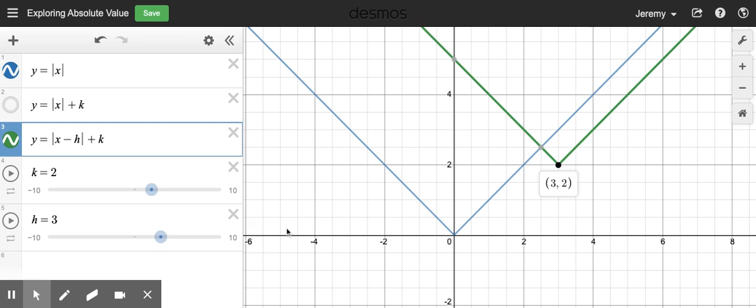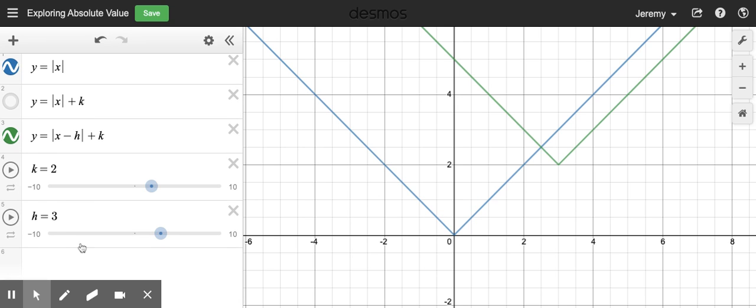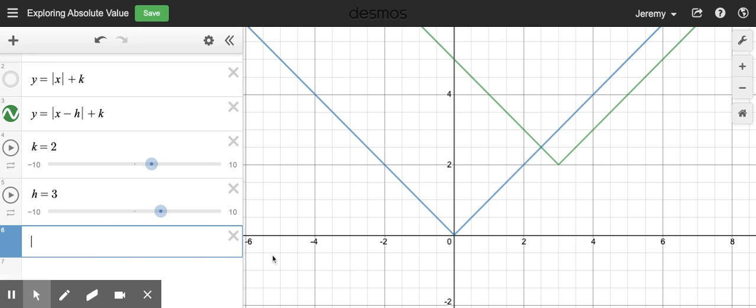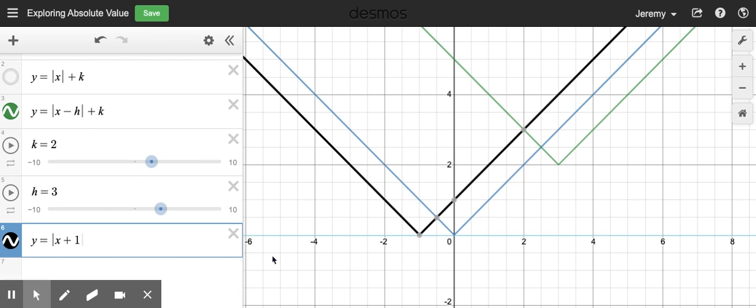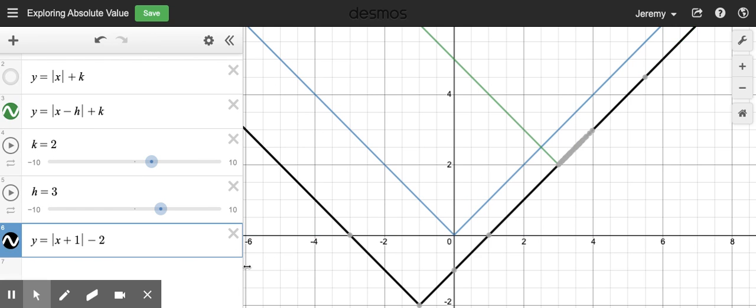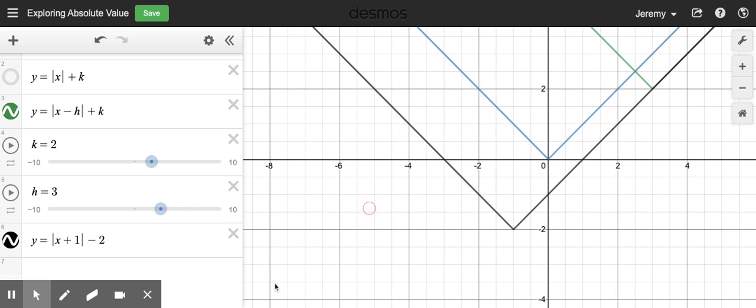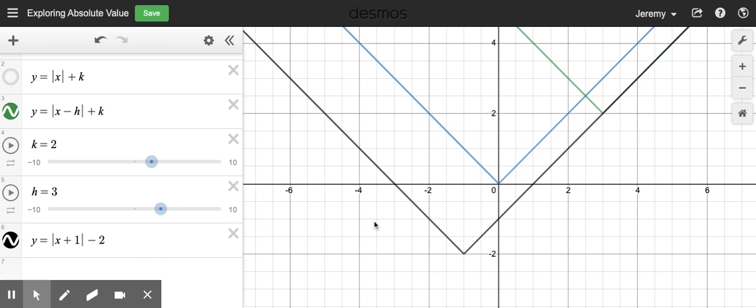And those are the coordinates of my vertex. So one of the things that we want to be able to do when we look at an absolute value equation is to be able to pick out exactly where the vertex is. So if I had something like this, this equation that I've graphed here in black.